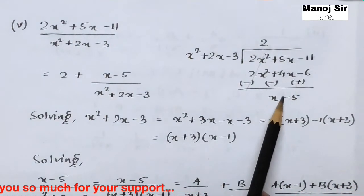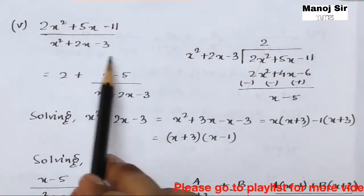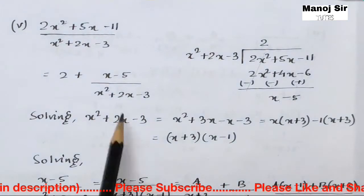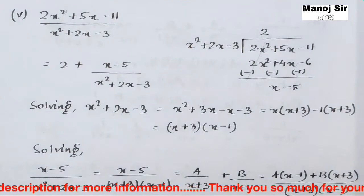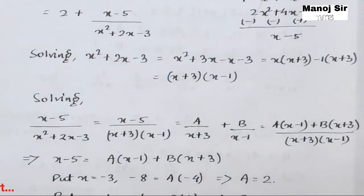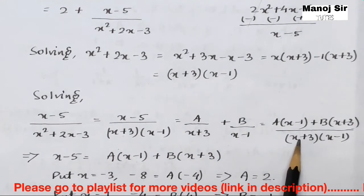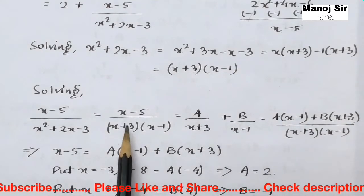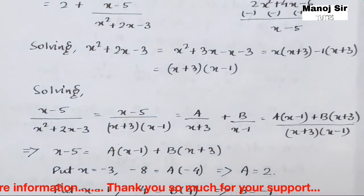Now we solve (x−5)/(x²+2x−3) the same way as the previous examples. Factoring the denominator: x²+2x−3 = (x+3)(x−1). So we write (x−5)/((x+3)(x−1)) = A/(x+3) + B/(x−1). Taking LCM and comparing numerators: x−5 = A(x−1) + B(x+3).